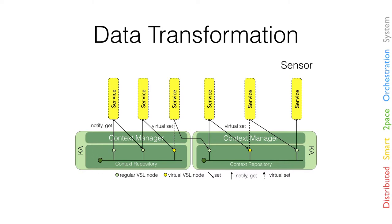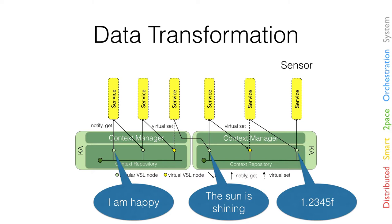Regarding in-network data transformation, a property of the middleware is that it's very easy to create service cascades. You can do nice things like transforming information from a sensor reading to 'the sun is shining,' introducing sensor fusion — for example, to derive 'make me happy.'